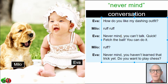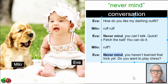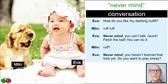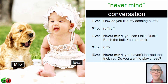Here's the conversation at regular speed. Follow along. Eva: 'How do you like my dashing outfit?' Milo: 'Ruff, ruff.' Eva: 'Never mind. You can't talk. Quick, fetch the ball. You can do it.' Milo: 'Ruff.' Eva: 'Never mind. You haven't learned that trick yet. Do you want to play chess?'